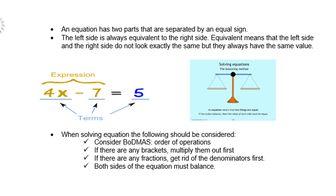For instance, 4x - 7 = 5. So 4x - 7 on its own is an expression or algebraic expression. And then 4x, -7 and 5 are the terms. Right. And of course, if you look at the little scale there, an equation is like a scale. It must always balance.